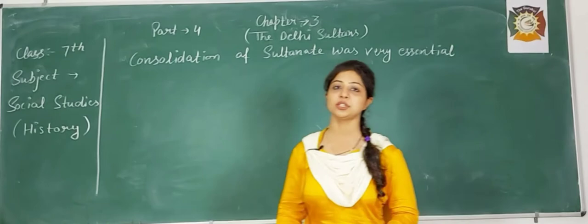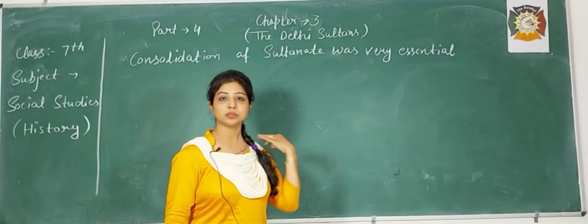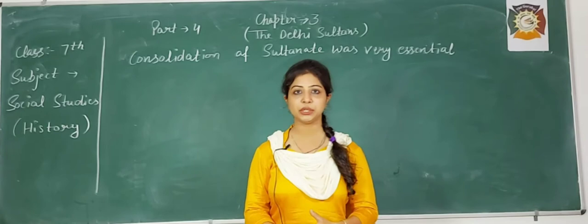Namaste Gurkulians, this is Rajnir Oda, TGT SST. Today we are doing chapter 3rd of history of class 7th, the Delhi Sultans. We have done 3 videos already. This is our part 4th.